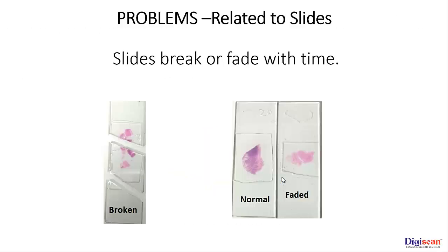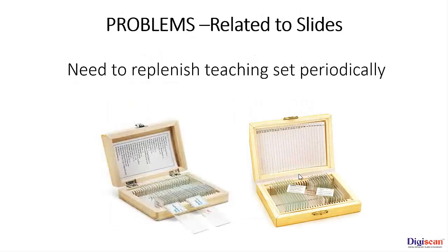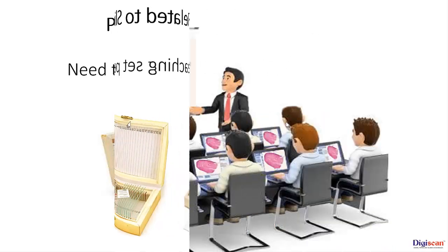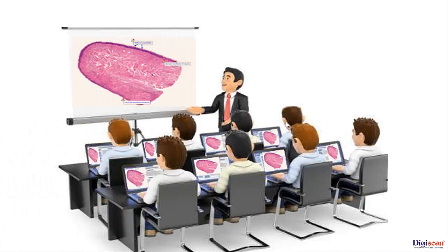There were other problems related to the slides themselves. Sometimes they fall from the hands of the teacher or student and break, or the slides fade with storage. A faded slide cannot be shown to students. There is a need to replenish teaching sets periodically, which is not an easy job. For 150 students, one has to have a minimum of 75 microscopes since each microscope is shared by two students, and preparing 75 slides of each lesion is a horrendous task.